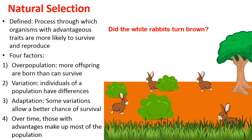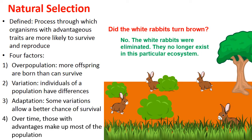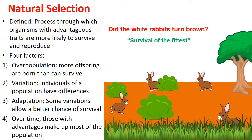This is what we mean by survival of the fittest. In this environment the brown rabbits were more fit — they were more likely to survive and reproduce. Even within the brown rabbits there is variation: some are faster, some slower, some meatier, some skinnier. Being brown doesn't guarantee survival, but in this environment it provided a clear advantage.